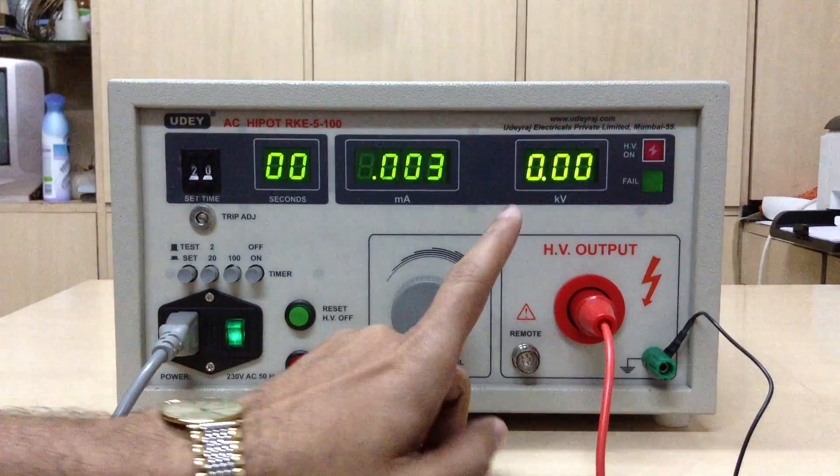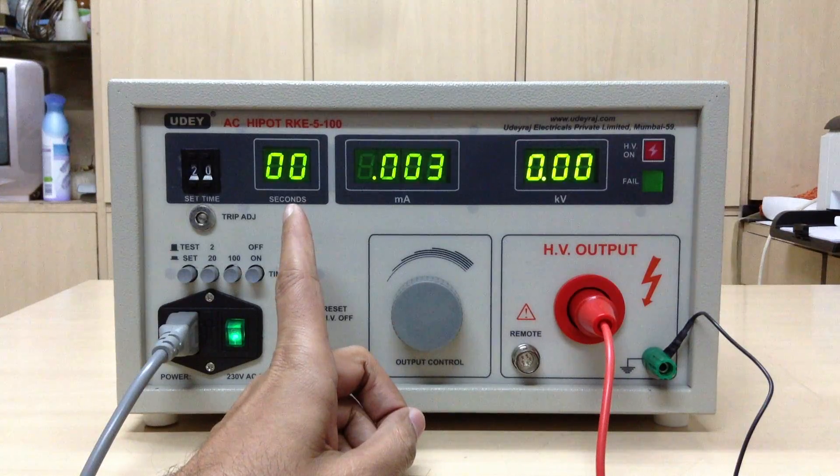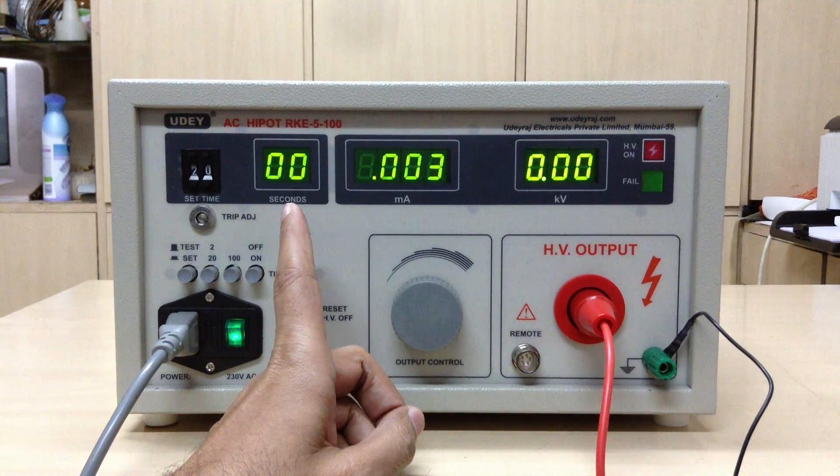The panel shows you the digital kV display, mA display, and the timer in seconds which can go up to 99 seconds.